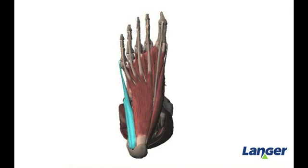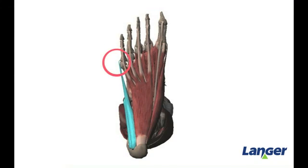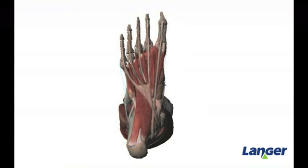The final muscle within the first layer is the abductor digiti minimi. The abductor digiti minimi originates from the lateral process of the calcaneus and inserts onto the proximal base of the phalanx. Its function is to flex and abduct the fifth digit.